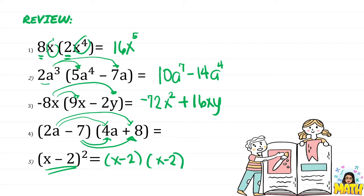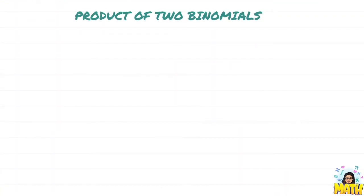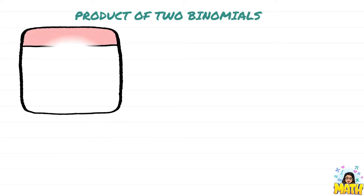Number 5 is the square of the binomial x minus 2, which means x minus 2 times x minus 2. For this video lesson, we will learn the short way to do numbers 4 and 5 easily. The first method is for the product of two binomials — it is applicable whenever we multiply any two binomials using the FOIL method.